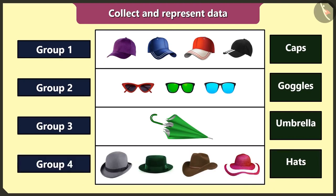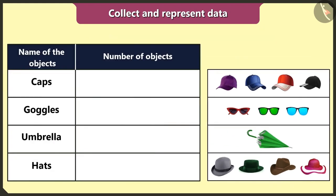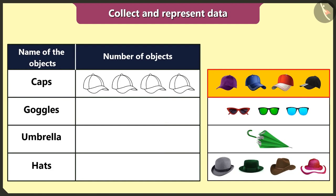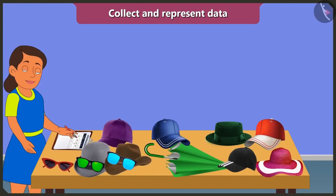Now I will count the objects in each group. I have four caps, three goggles, one umbrella and four hats. Now I will create a table and represent all the data in it by drawing pictures: four caps, three goggles, one umbrella, and four hats drawn in the table. It looks good.